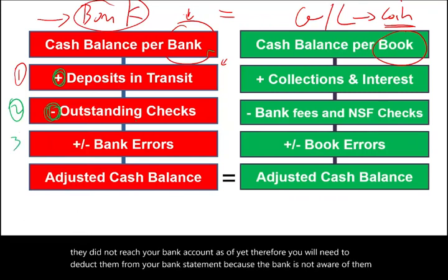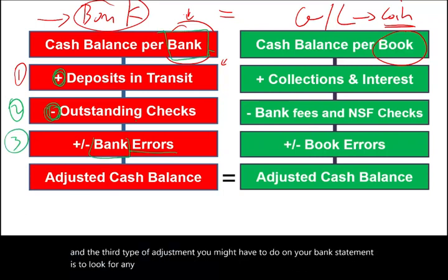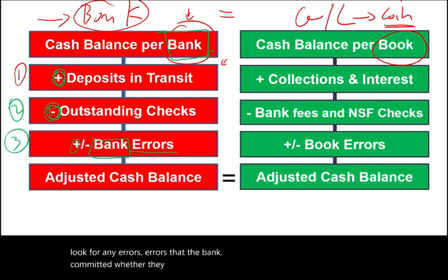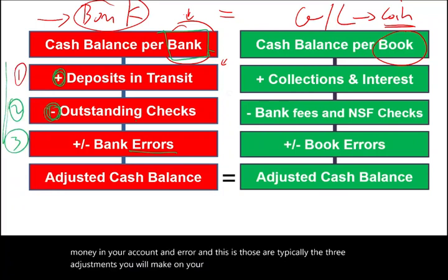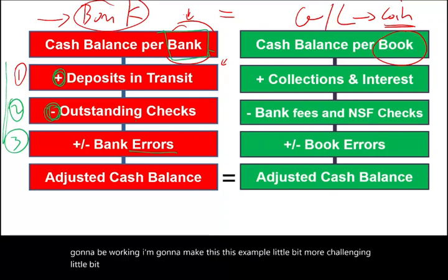The third type of adjustment you might have to do on your bank statement is to look for any errors — errors that the bank committed, whether they added money to your account or deducted money from your account. Those are typically the three adjustments you will make on your bank side. In the example I'm going to work, I'm going to make it a little bit more challenging and tricky, but you will see how when I look at the figures.